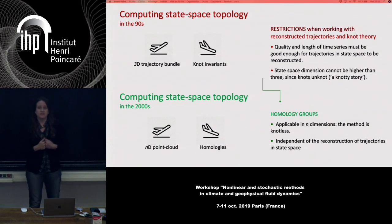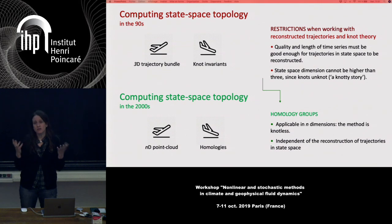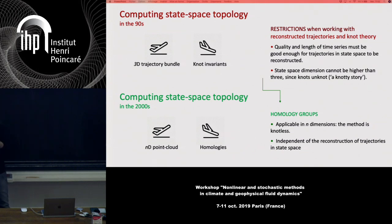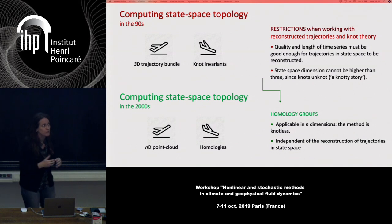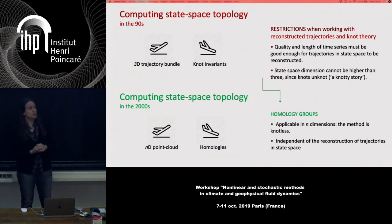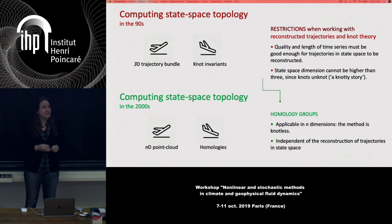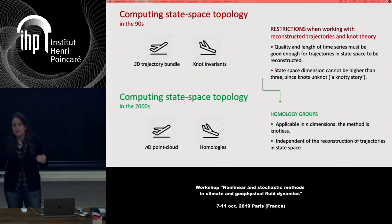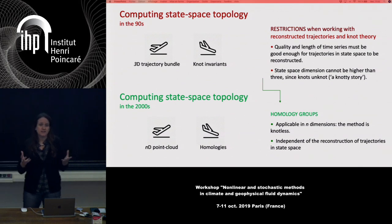What's the problem with this strategy? First, there is a series restriction: the quality and length of the time series must be good enough for trajectories in state space to be reconstructed — this is not always possible, especially when there is noise, which is often the case in experiments. The second difficulty is mathematical: if you are using knot theory, state space dimension cannot be higher than 3, because knots are knots — your theory lets you describe 3D dynamical systems but you cannot go further.